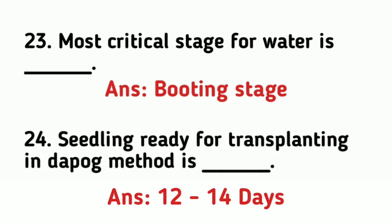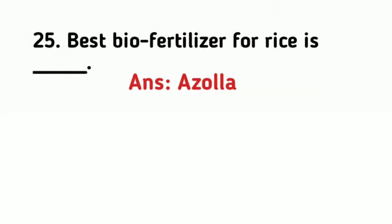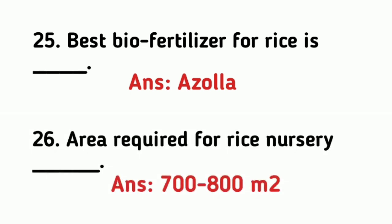The seedling is ready for transplanting in the DAPOG method in 12 to 14 days. The best biofertilizer for rice is Azolla. The recommended nursery area for rice per hectare is 700 to 800 meter square.